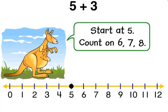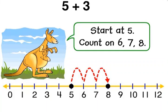Start at 5. Count on: 6, 7, 8. 5 plus 3 equals 8.